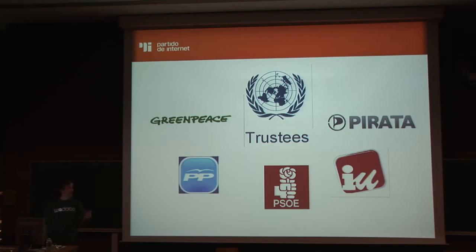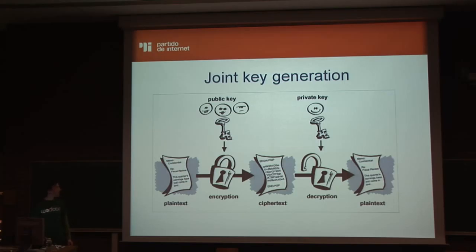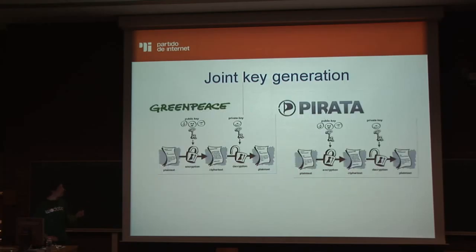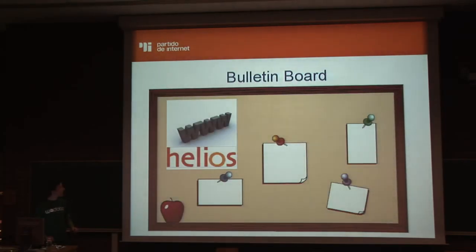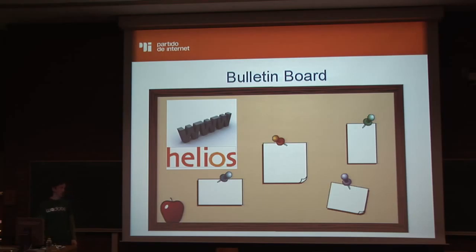It needs to be difficult for this collaboration and corruption to happen. For voting, we need to generate a joint key. Each trustee generates a public and private key, then publishes the public key on the voting board. We use the Helios voting system for this, made by Ben Adida and his colleagues at Harvard — he's a cryptographer.